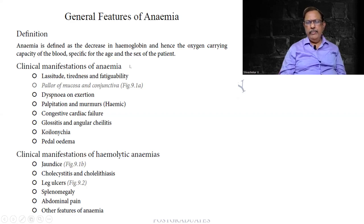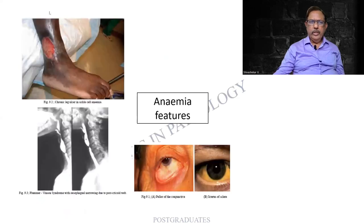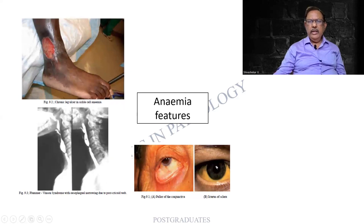The definition of anemia: don't write simply 'decrease in hemoglobin.' Write 'decrease in hemoglobin and hence the oxygen-carrying capacity of the blood, specific for the age and sex of the patient.' They might ask you this during hemoglobin estimation in practicals. Also, a patient can have dysphagia — what we call Plummer-Vinson syndrome, classical of iron deficiency anemia. On the contrary, jaundice and hemolytic features indicate hemolytic anemia.